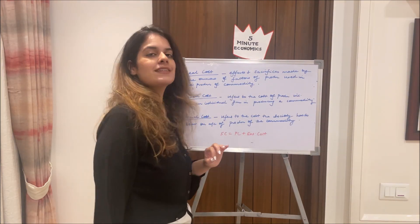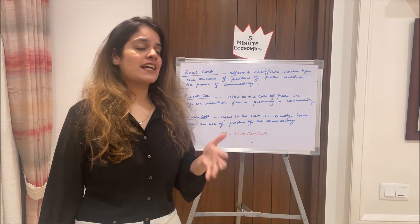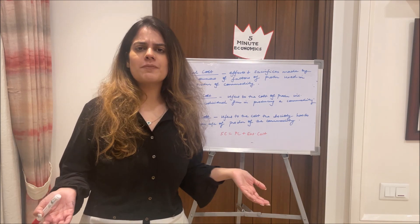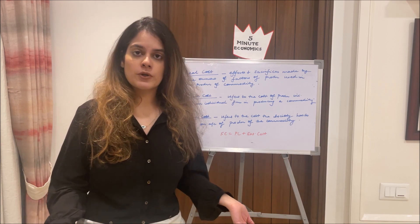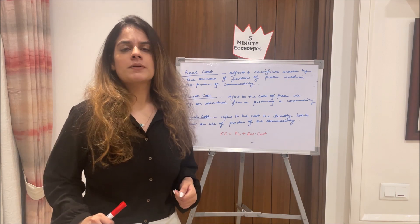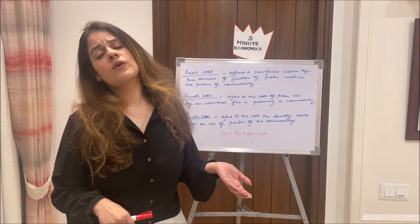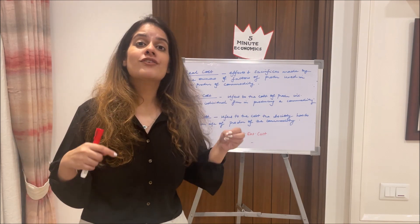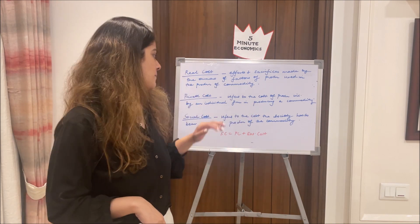Moving ahead to real cost, private cost, and social cost. Real cost is the efforts and sacrifices made by the owners of the factors of production used in the production of a commodity. For example, when producing a commodity we face discomfort and disutility that is not accounted for — injury, not spending time with family, mental pressure — all of this is the real cost we incur which is not actually accounted for in monetary terms.